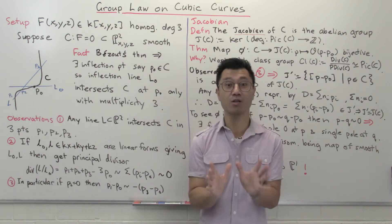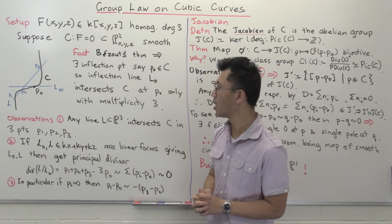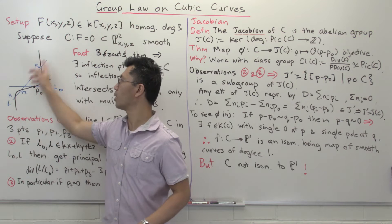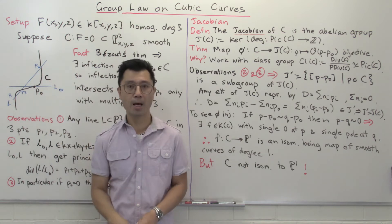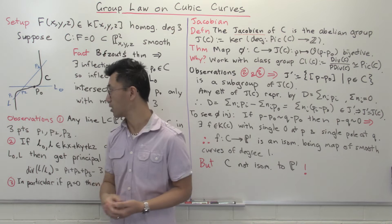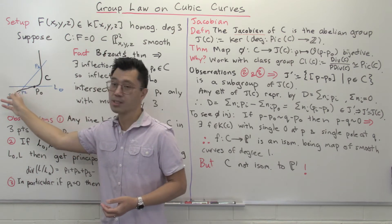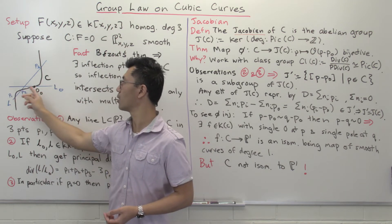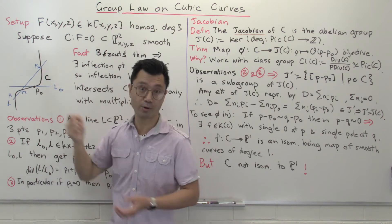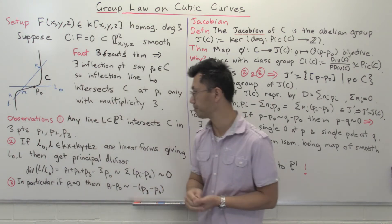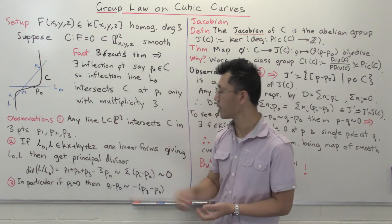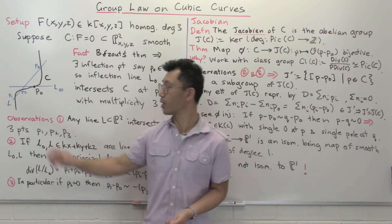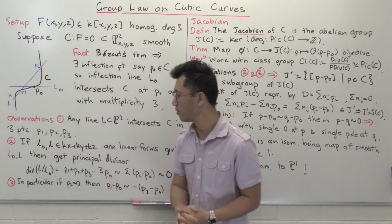Now let's make three very interesting observations. Let's pass a different line through this cubic — I've got this diagonal L here. It would intersect in three points, P1, P2, P3, at least if you include multiplicity. So it may be that two points coincide when you have a tangent, and when there's an inflection point, all three will coincide. So let's pick one such line L inside this projective plane P2, and call these three intersection points P1, P2, and P3. That's the first observation.